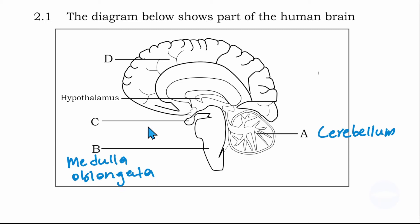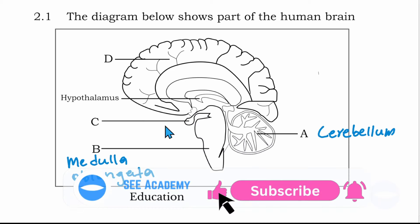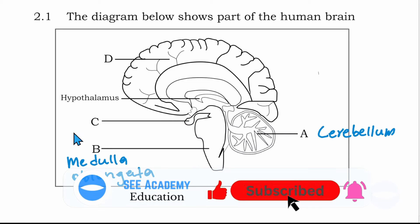Number C is this small part here — it's a gland, the pituitary gland. You remember in human reproduction we talked about the pituitary gland and its function. So number C is the pituitary gland.